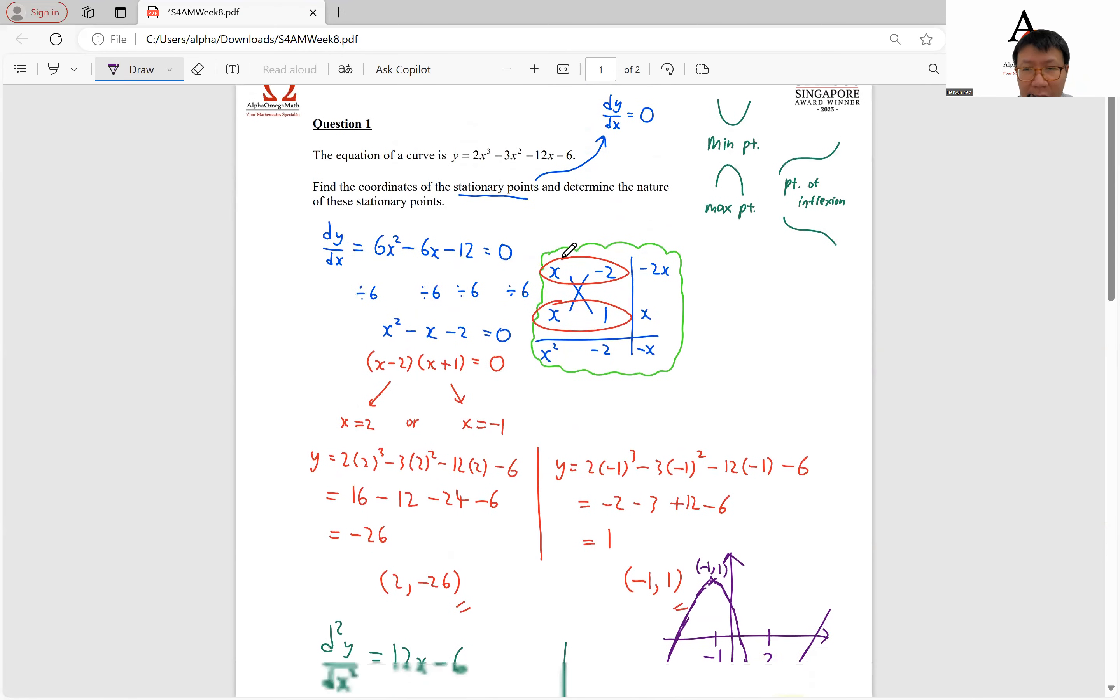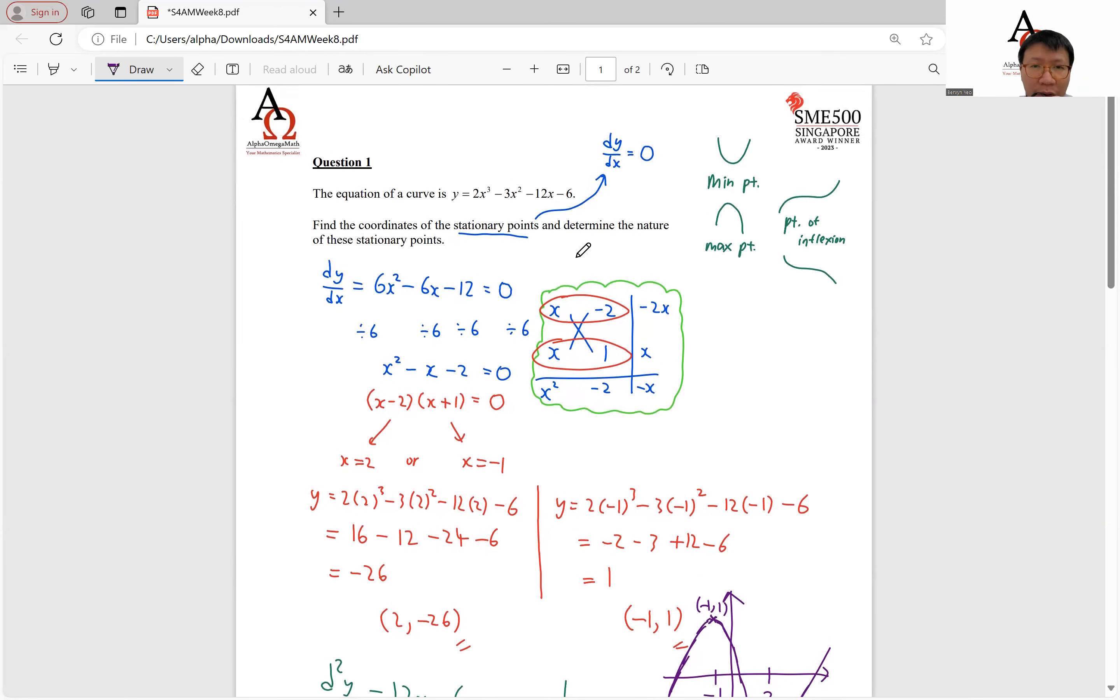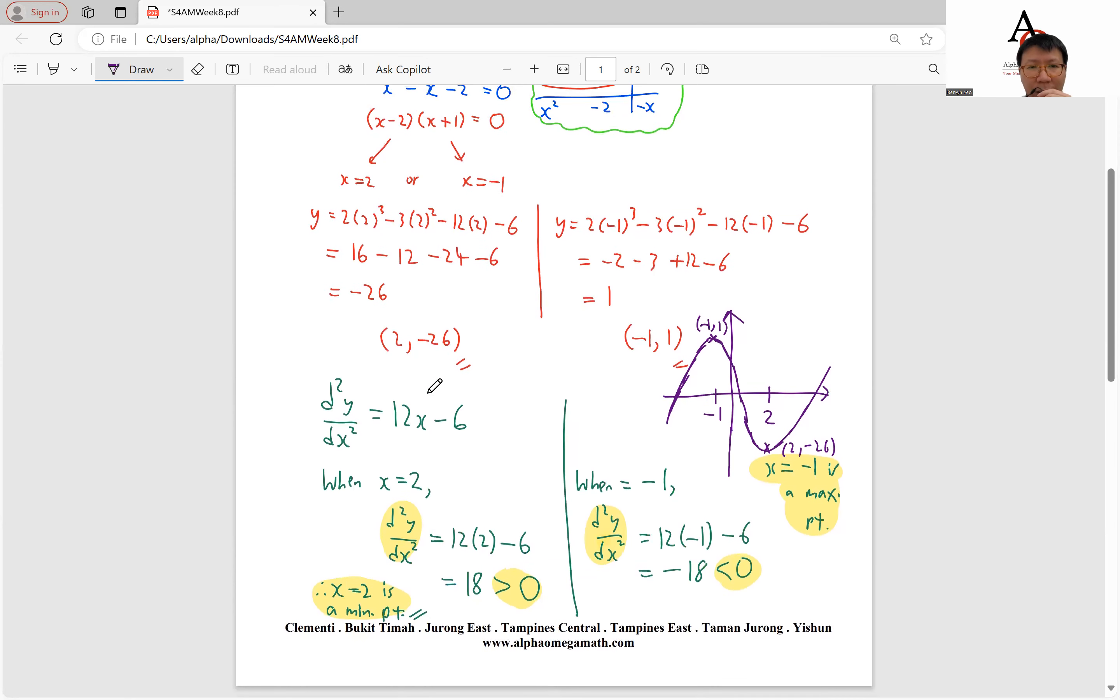So that's how visually it will look like if we were to sketch it out roughly. So let's do a quick summary of the methods used for this question. So first and foremost, to find our stationary point, we will let our dy over dx be 0. And from there, we can find the x coordinates, and we sub them into our original function to find our coordinates of our stationary points. And the next thing we will do to find the nature, in this case, we apply the second derivative test by differentiating our function a second time and subbing in our x coordinates of stationary points to see whether it is more than 0 or less than 0. And from there, we conclude the nature of these two points.